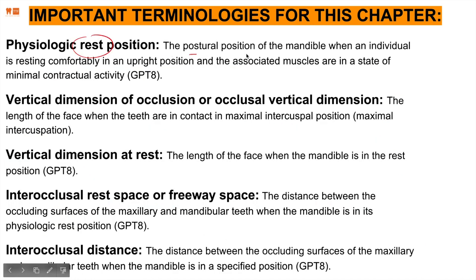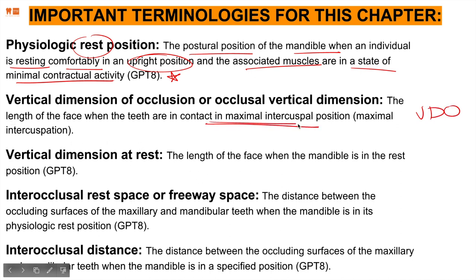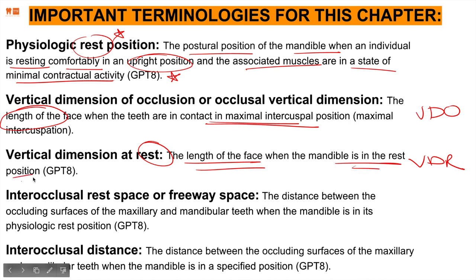Physiologic rest position: it is the postural position of the mandible when an individual is resting comfortably in an upright position and the associated muscles are in a state of minimal contractual activity. VDO is basically when the teeth are in maximum intercuspation, and that's when we measure the length of the face — it's when our teeth are occluding. VDR is the vertical dimension of the face measured when the mandible is at rest position, which is the dropped jaw position when muscles of mastication are completely relaxed.